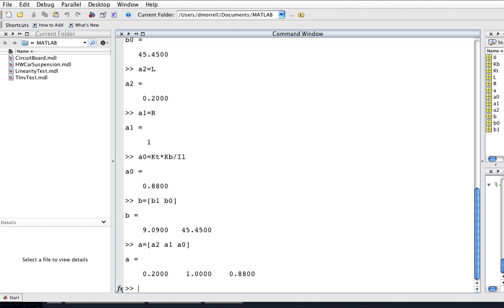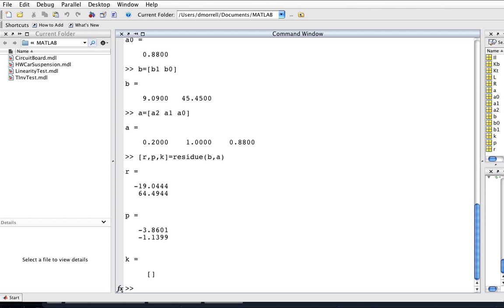And now we can do the partial fraction expansion, which will look like this. So, R, P, K is equal to residue B, A. And it thinks for a little bit, and now we have our partial fraction expansion.